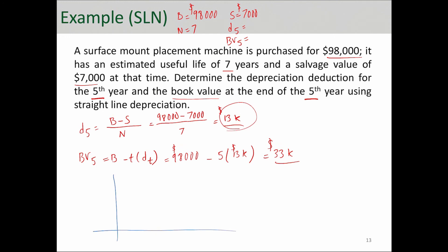Well, graphically speaking, what's happening here is that you bought this surface mount placement at $98,000, and the value of this asset is going to depreciate over seven years until it gets to $7,000. So let's say this is year seven, and this is the straight line depreciation that we're having here. And what we just calculated for book value of year five, we found that this is $33,000.